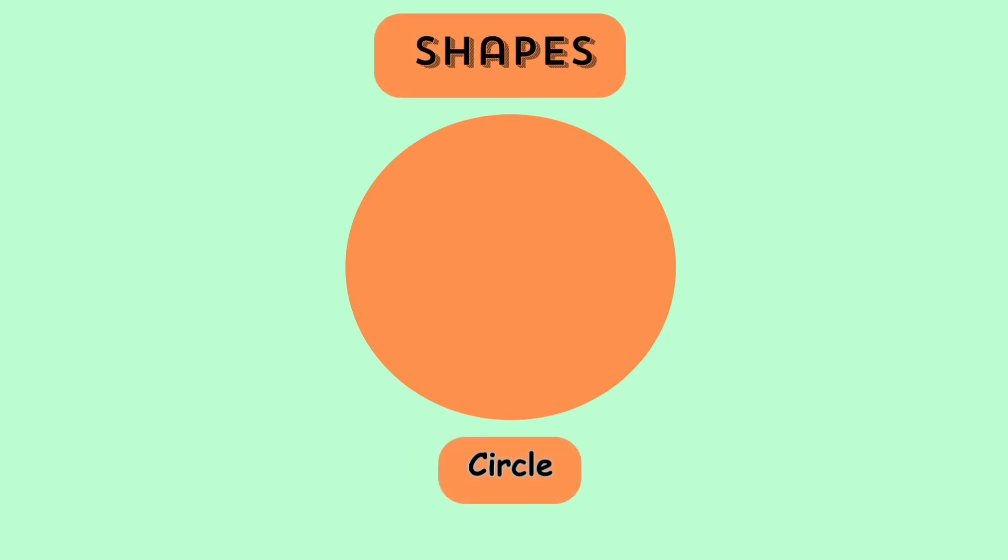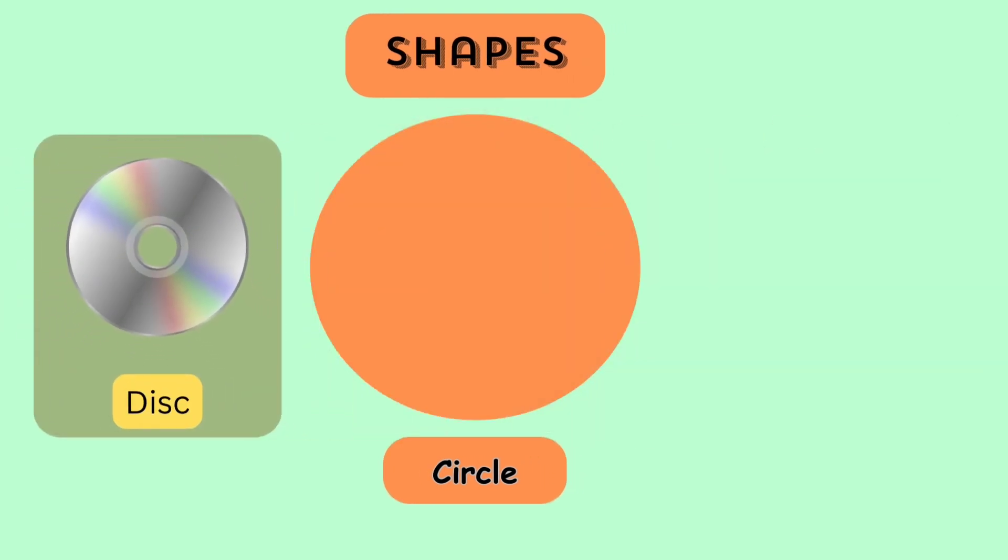Can you tell me what shape is this? Yes, it is a circle. Can you find something that looks like a circle? A compact disc. It is a digital disc to store and play back audio and video.